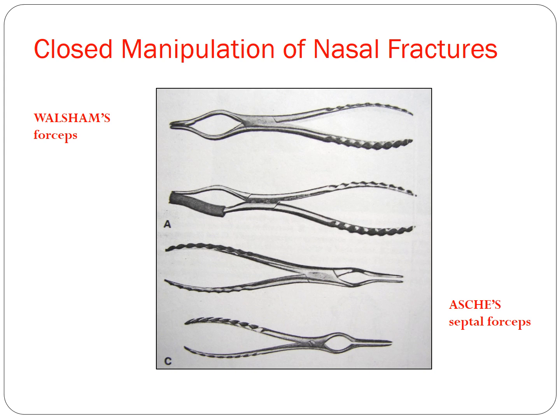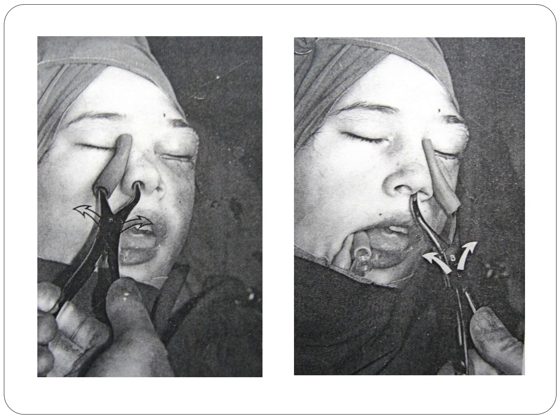The instruments used for reduction of a nasal bone are the Walsham forceps and the Ash septal forceps. The Walsham forceps has a sleeved beak that lodges against the skin while the other beak is introduced into the nostril; the nasal bone is held between the beaks and moved laterally or medially according to the displacement, bringing the fragment back to its anatomic position. The Ash septal forceps is used specifically to reduce a fractured nasal septum.